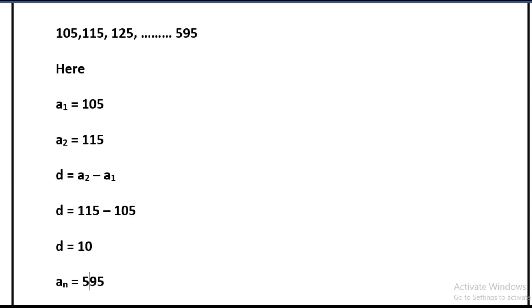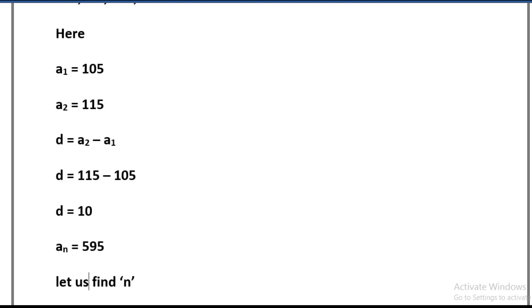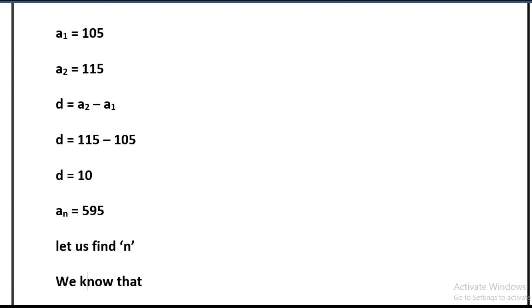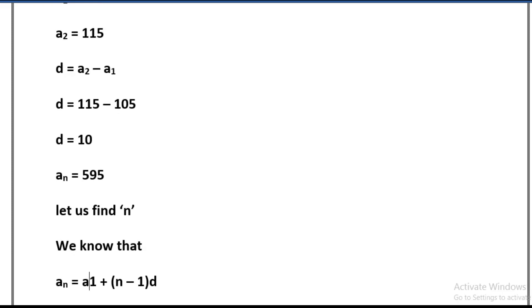Last term, that is an, is equal to 595. So let us find n. We know that an equals a1 plus (n minus 1) times d.